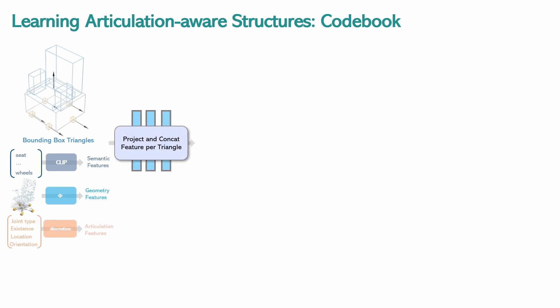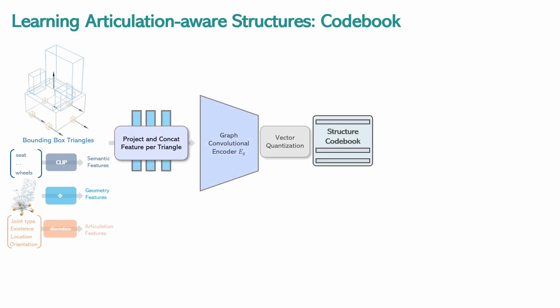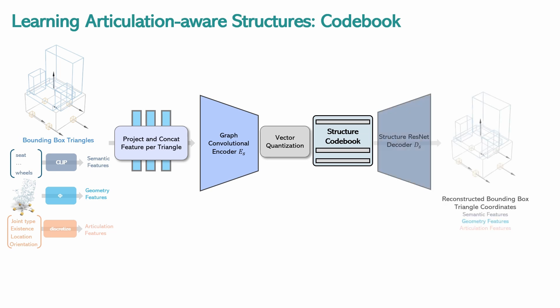These triangles are encoded with a graph convolutional encoder, quantized at the bottleneck, and decoded back to their bounding box locations, reconstructing both geometry and per-face attributes.